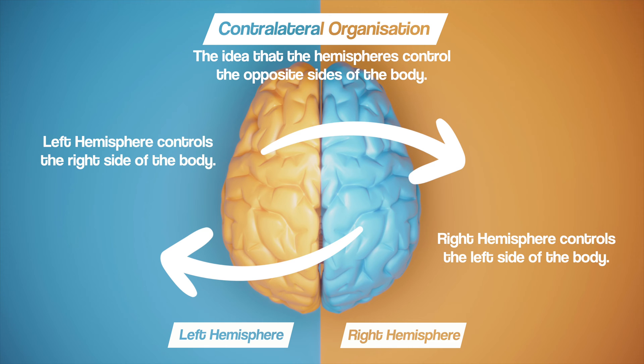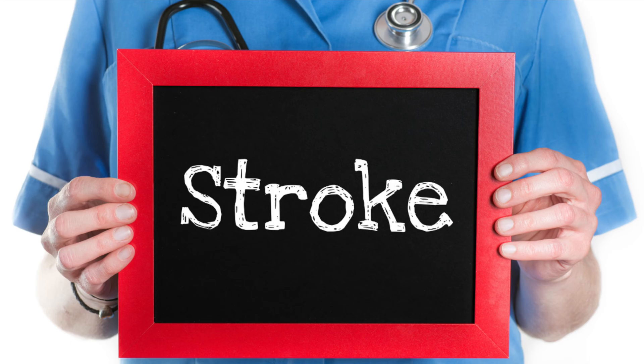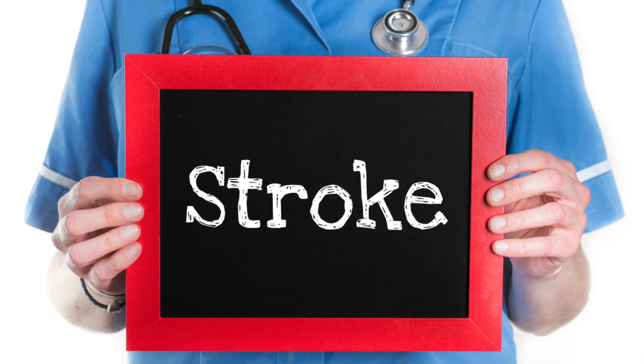Amazingly, it's thought that your left hemisphere controls the right side of your body, and the right hemisphere controls the left side of your body. The idea that the hemispheres control opposite sides of the body is called contralateral organisation — the word 'contra' means opposite, just like when we use the word 'contradict'. If you've ever known someone who's had a stroke, you can tell which side of the brain the stroke took place on by which side of the body has been impacted. If they are struggling to move on the right side, it's because the left hemisphere has been damaged.